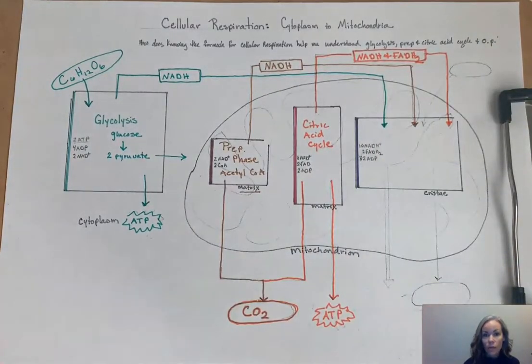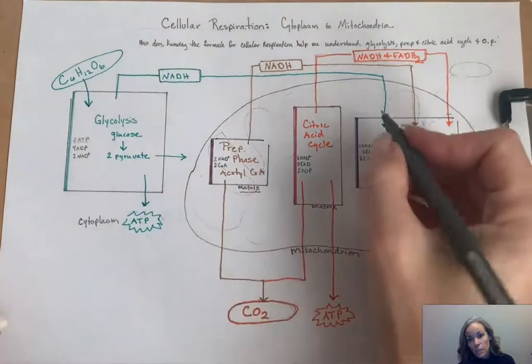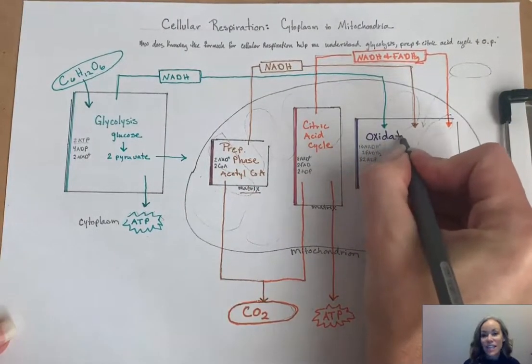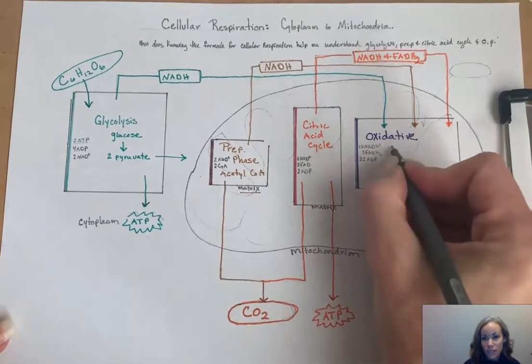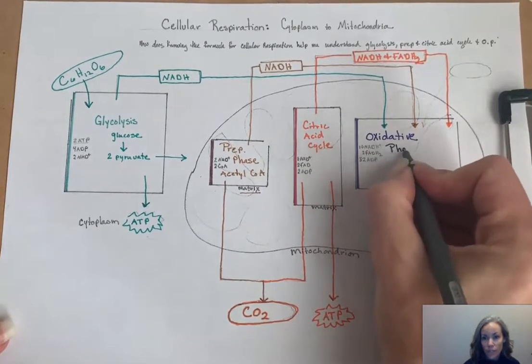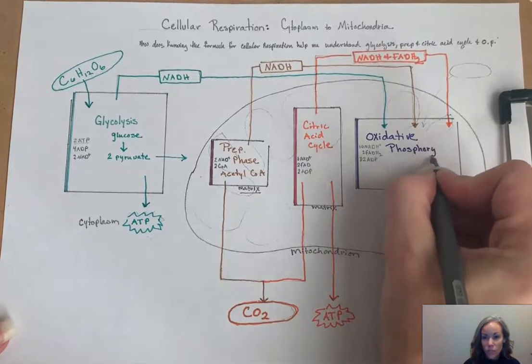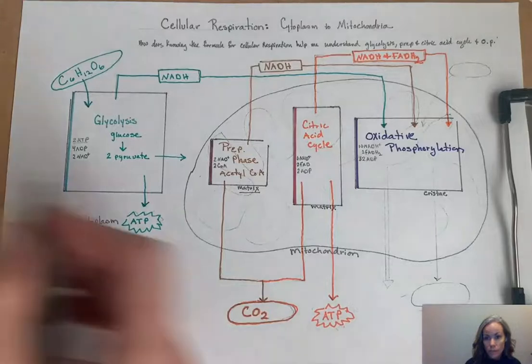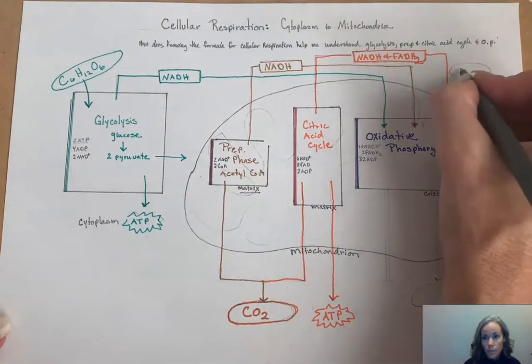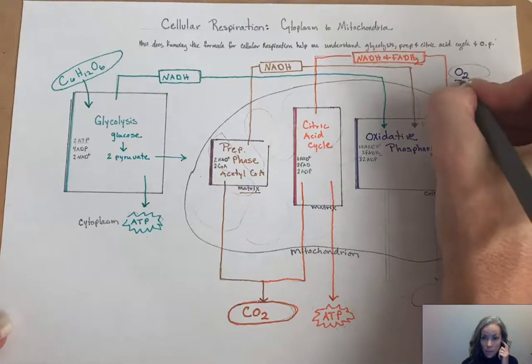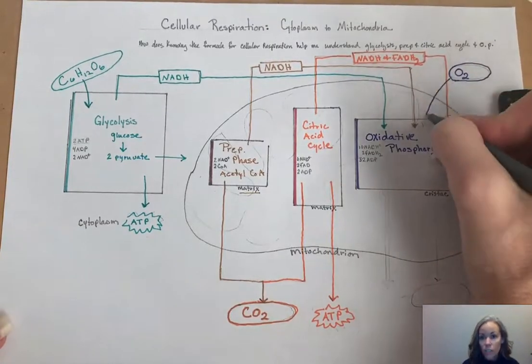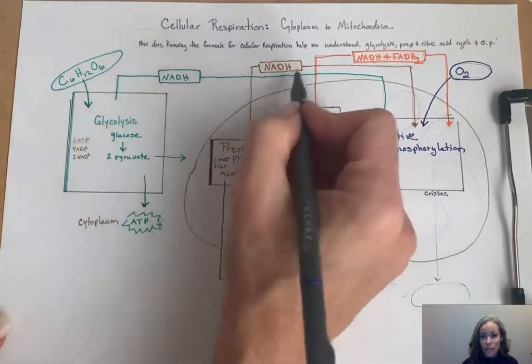So all three of those first stages shuttle over energy-rich molecules to the oxidative phosphorylation phase. Oxidative phosphorylation. That's fun to break out at parties, makes you sound real smart. It's also known as the electron transport chain, very similar to what happens in photosynthesis. There's an input of oxygen in this stage. So again, when we're thinking about the overall reaction, oxygen is used during the last stage.